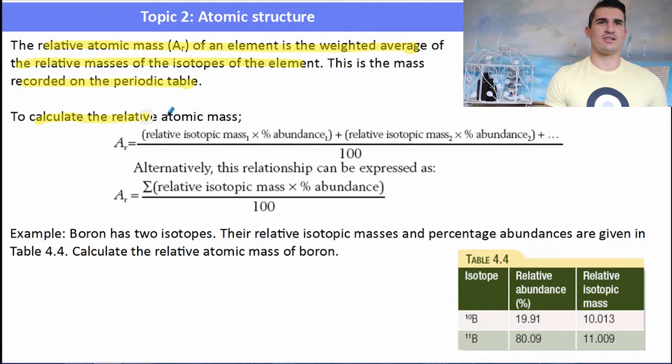So if we're asked to find the relative atomic mass, we can do that as long as we have a certain amount of data. So to calculate the relative atomic mass, we need to know the relative isotopic mass, so the exact mass of the isotope, and its percentage abundance. And then we add that to all of the other isotopic masses and the percentage abundances, and divide it by a hundred. So it's like the sum of all of the isotopic masses times their abundance divided by a hundred.